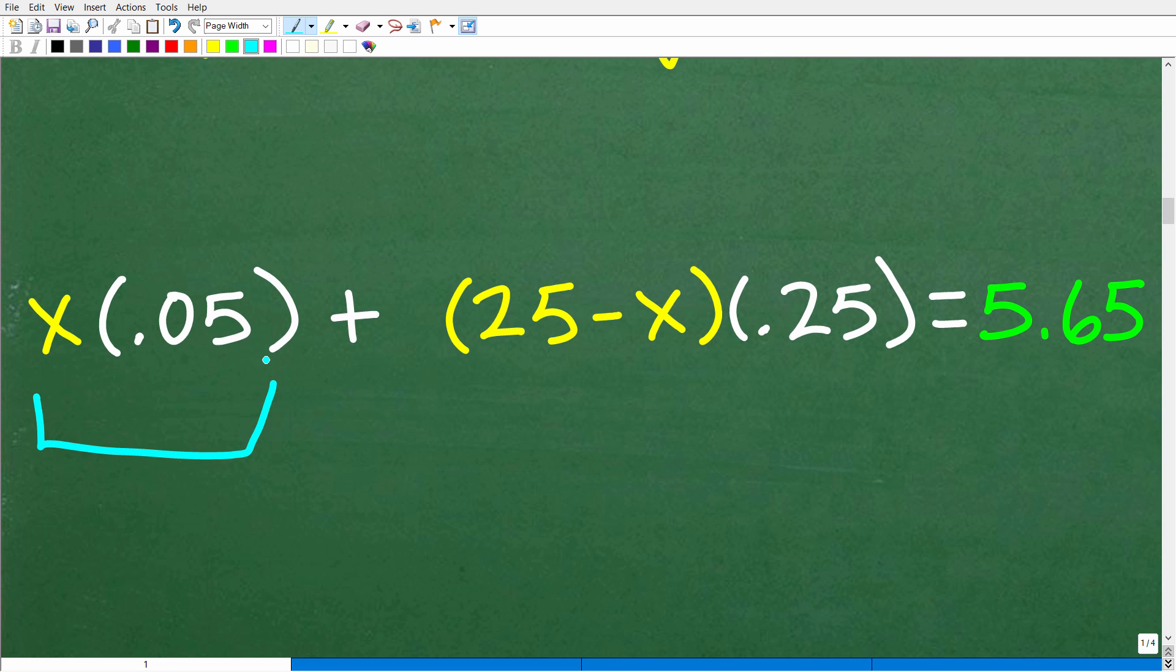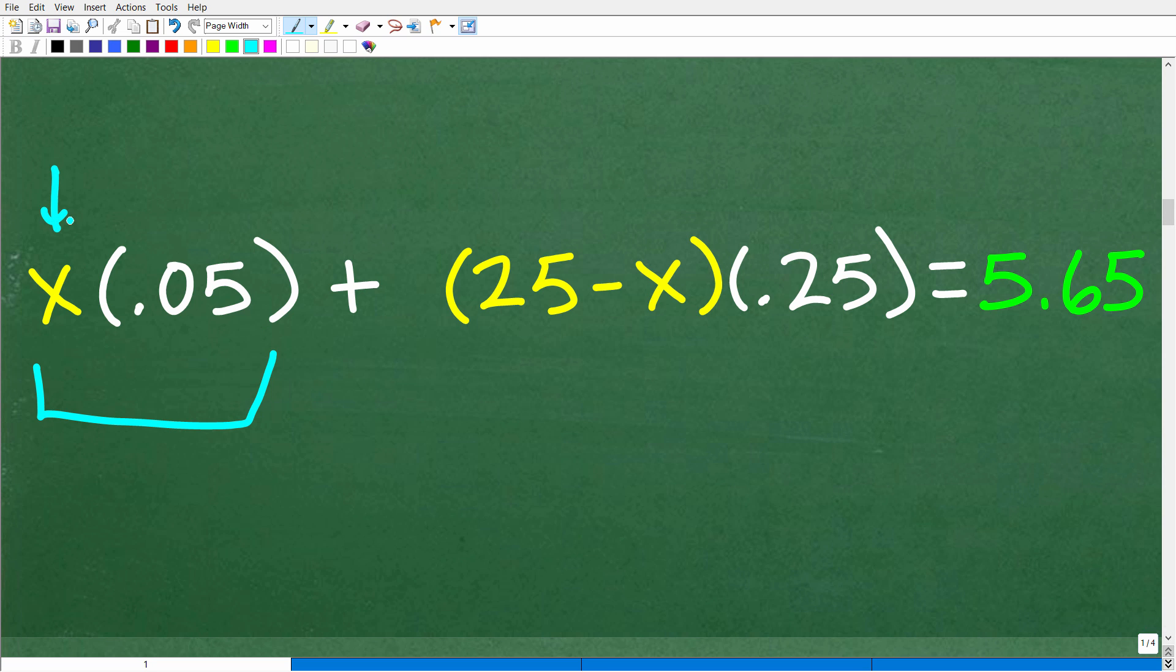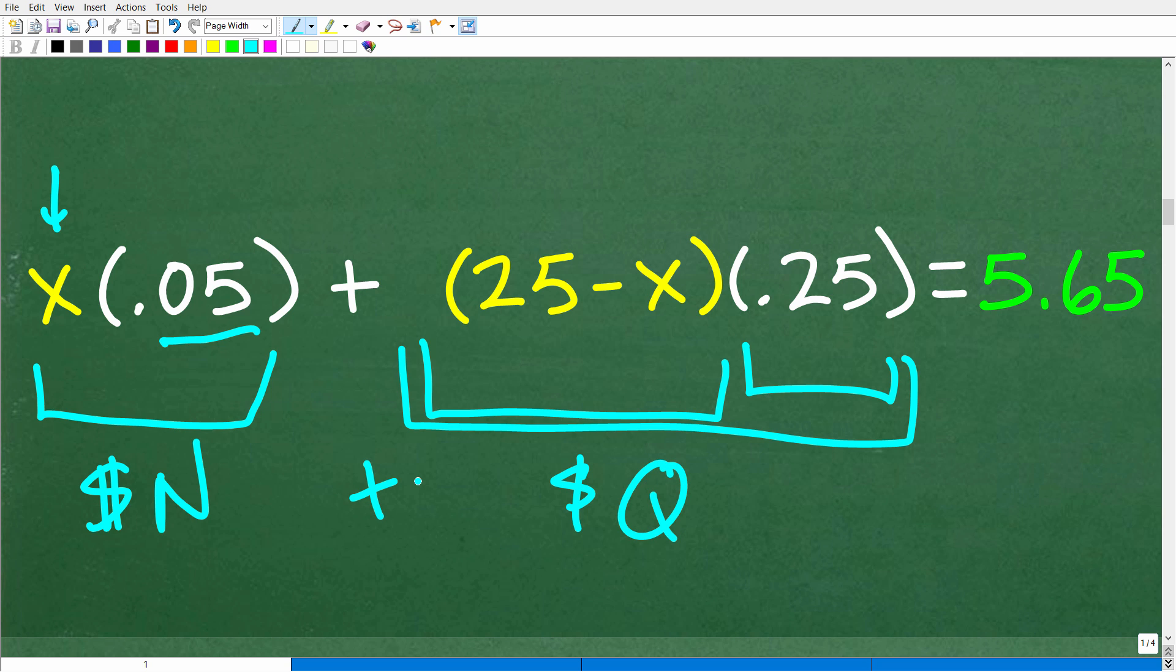And here it is. So how much money in terms of the nickels did Ann give the cashier? Well, she had x nickels, and each nickel is worth 0.05 of a dollar. Well, 0.05 times that many nickels is how much money in nickels she gave the cashier. Now, how much was the quarters? Well, she used this many quarters, 25 minus x quarters, and each quarter is worth 0.25 of a dollar. So this is the total amount in quarters. So if we add these up, the nickels and the quarters, well, that is the total amount that she paid the cashier, which of course is $5.65.